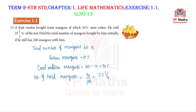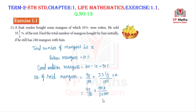To convert 33 and 1/3 to an improper fraction: 33 multiplied by 3 is 99, and 99 plus 1 is 100. So 33 and 1/3 equals 100/3. The sold mangoes are therefore 100/3 divided by 100, multiplied by 90x/100, which simplifies to 30x/100.